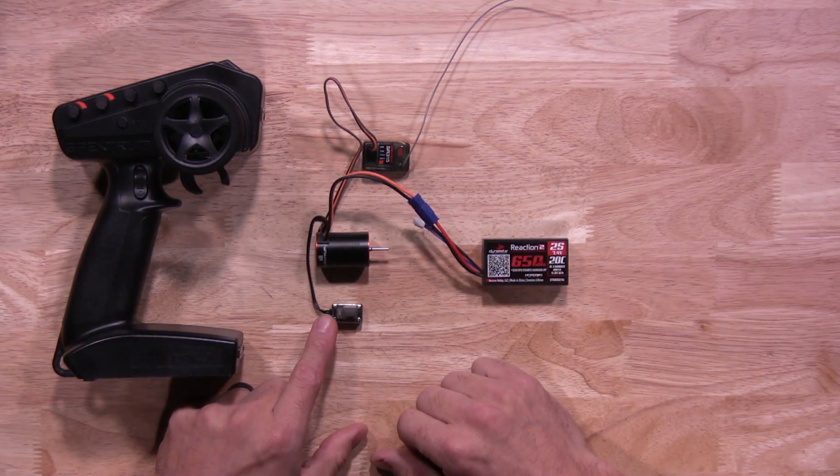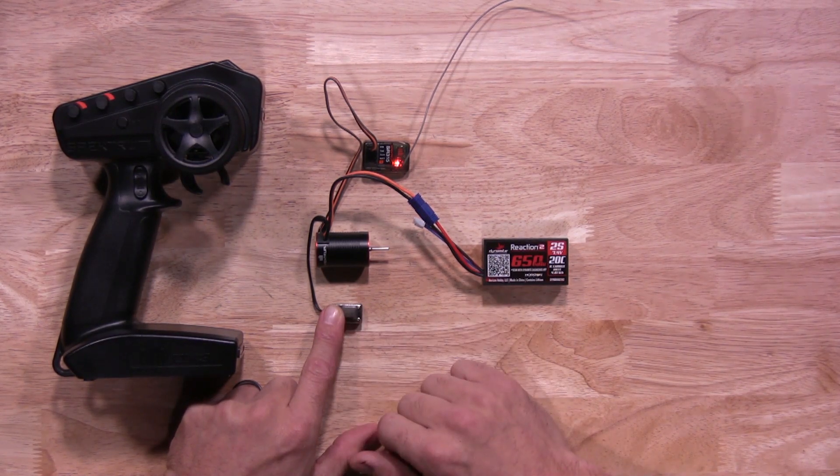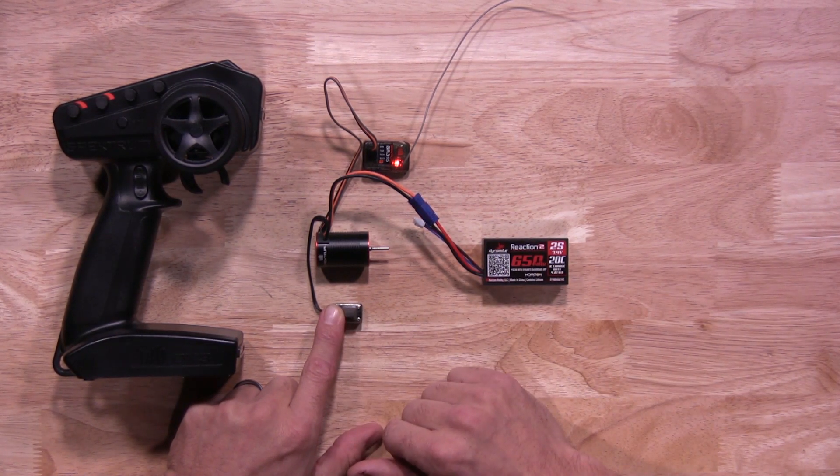Next, you're going to press and hold the set button on the on-off switch. Power on the 2-in-1 unit. You're going to hold until you hear the motor start beeping. Once you hear that, you can let go.